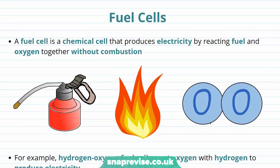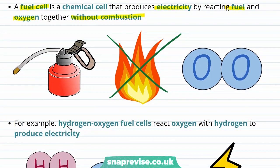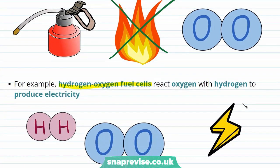One useful specific type of chemical cell is a fuel cell. A fuel cell produces electricity by reacting fuel and oxygen together but without combustion. This is therefore a different process to just burning the fuel in air. For example, hydrogen-oxygen fuel cells react oxygen with hydrogen in order to produce electricity.